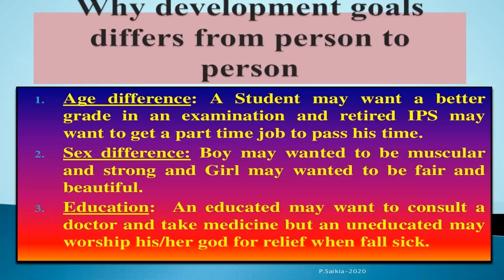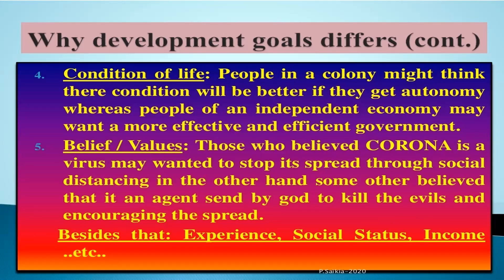Why do different people have different developmental goals? First, age difference — a student may want a better grade in an examination while a retired IPS officer may want a part-time job to pass his time. Sex difference — a boy may want to be muscular and strong, but a girl may want to be fair and beautiful. Education — an educated person may want to consult a doctor and take medicine, but an uneducated person may worship a nature god for relief when sick. The condition of life also matters — people in a colony might think their condition will improve with autonomy, whereas people of an independent economy may want more effective and efficient government.